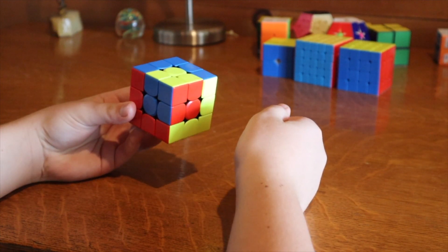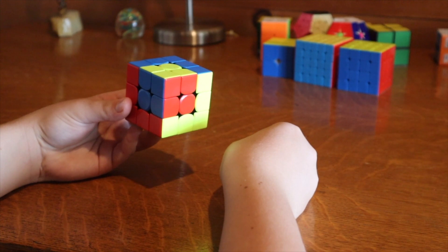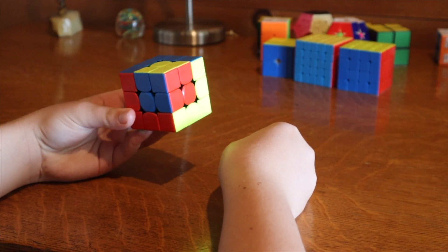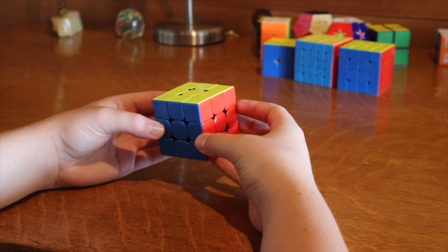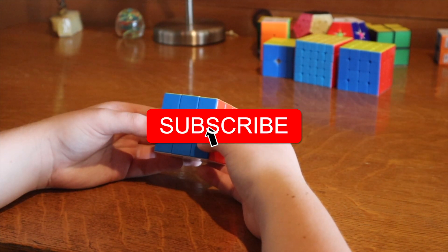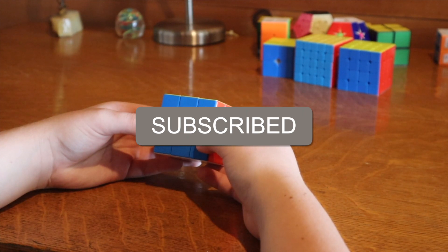If your cube looks like this, then you've done this algorithm correctly and you now know Rubik's cube notation. Now that you know Rubik's cube notation, you can learn how to solve your cubes. Please subscribe and like this video for more tutorials like this one.